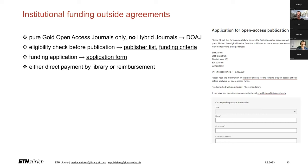Now let's put the focus on funding outside the agreements. If your desired journal is not part of an agreement but is a Gold Journal, you can apply for APC funding via our application form. The Directory of Open Access Journals, shortly DOAJ, indexes Gold Journals and can help you figure out whether your journal is Gold or Hybrid. Hybrid journals are never indexed in DOAJ. Only corresponding authors are eligible for funding — this is a general rule at ETH Library. For Gold APC outside the agreements, there is a price cap at 5,000 US dollars, VAT excluded. If an APC is higher, ETH Library cannot fund it. You will find all funding criteria on our documentation website.